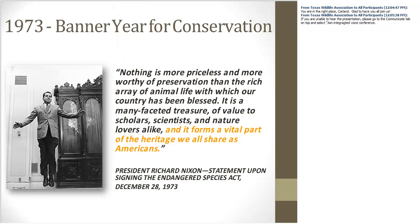1973 was the big year for conservation. Congress passed the more robust Endangered Species Act of 1973 with overwhelming bipartisan support — 355 to 4 in the House of Representatives and a voice vote in the Senate — signed into effect by President Richard Nixon. That year, 80 nations got together in Washington, D.C. and signed an international treaty: the Convention on International Trade and Endangered Species of Wild Fauna and Flora, also known as CITES, which monitors and restricts international commerce in plant and animal species believed to be harmed by the trade.